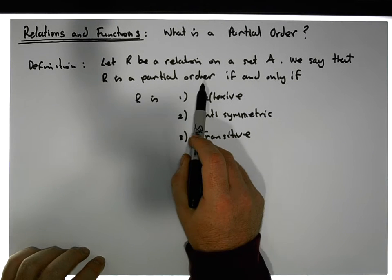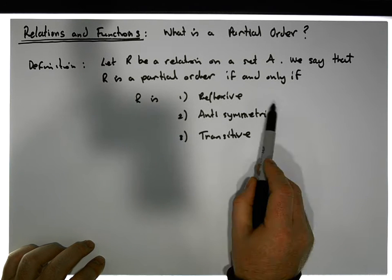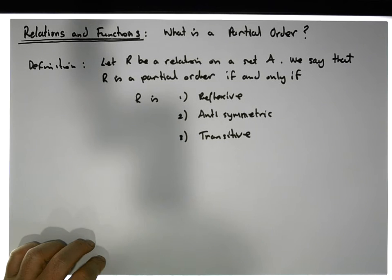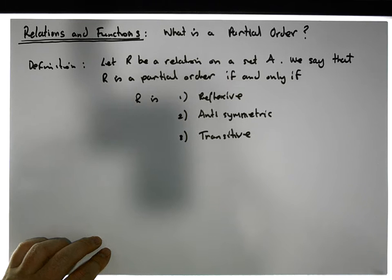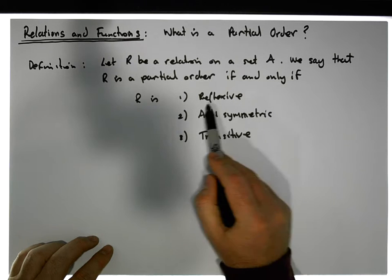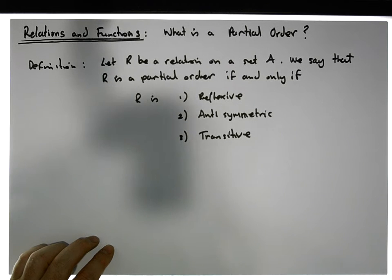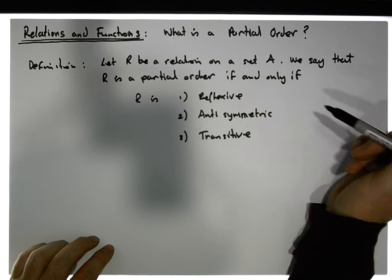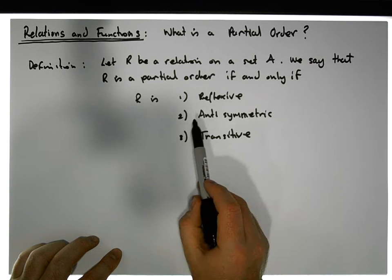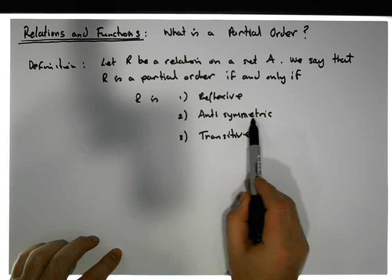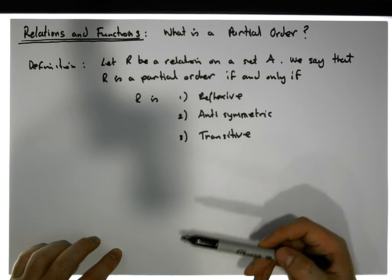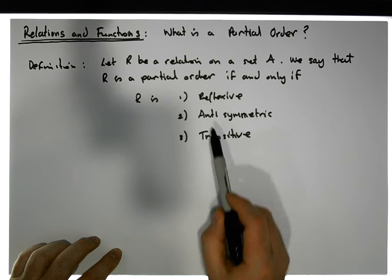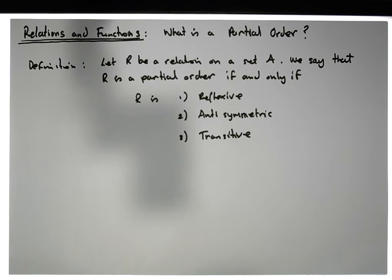For a relation to be a partial ordering it needs to meet these three conditions. When we talked about equivalence relations, an equivalence relation was reflexive, symmetric, and transitive. If we change that symmetric property to anti-symmetric, we get a different type of relation — and we define that particular type of relation to be a partial order.